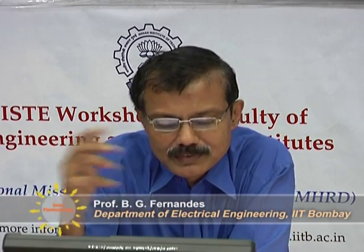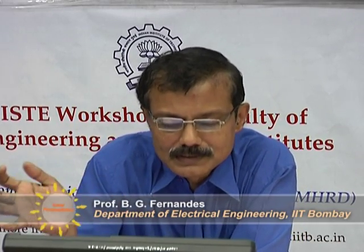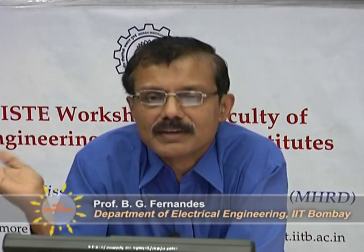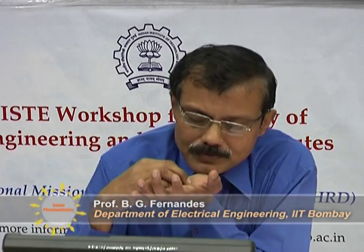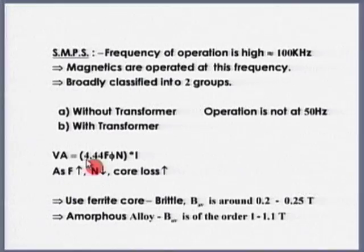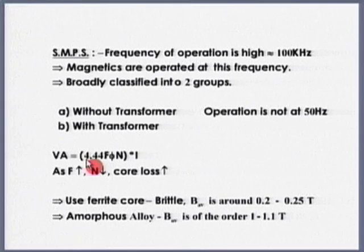As the frequency increases, if the core has a hysteresis loop, core losses increase. Therefore, I may not be able to use the core used in 50 Hz conversion in high-frequency power conversion. In high-frequency power conversion, I need to use a core which has a very small hysteresis loop. Generally, a ferrite core is used.